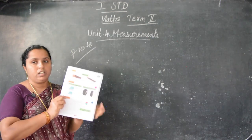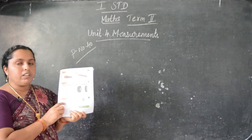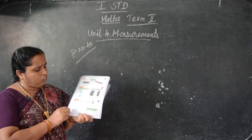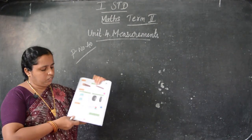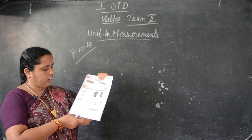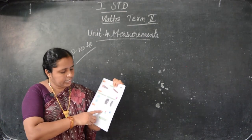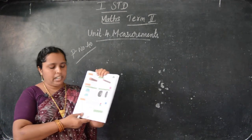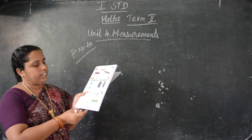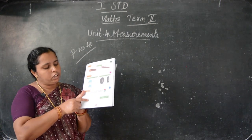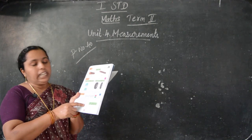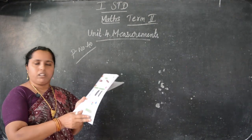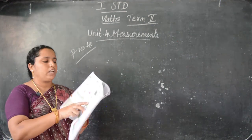You have to color this one. Have you all got the book, children? All take your math book. You have to do this. Color the thicker candle with red color and the thinner candle with green color. So which one you have to color in red color? Thicker. So this one you have to color in red color. Then thinner with green color. You have to color this one.